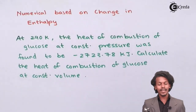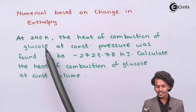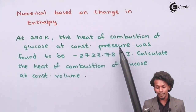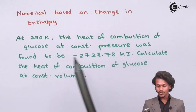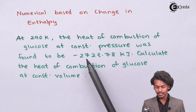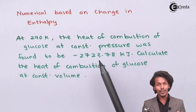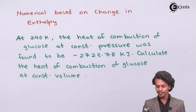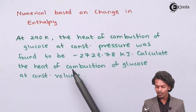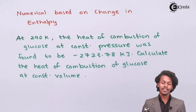The question asks: at 290 Kelvin, the heat of combustion of glucose at constant pressure was found to be minus 2723.78 kJ. We have to calculate the heat of combustion of glucose at constant volume.